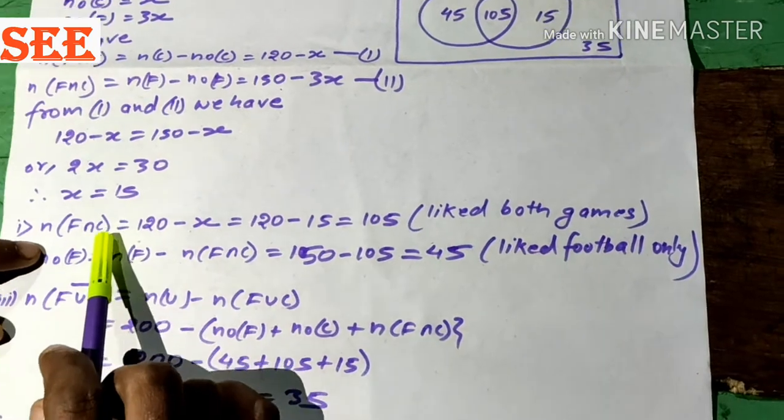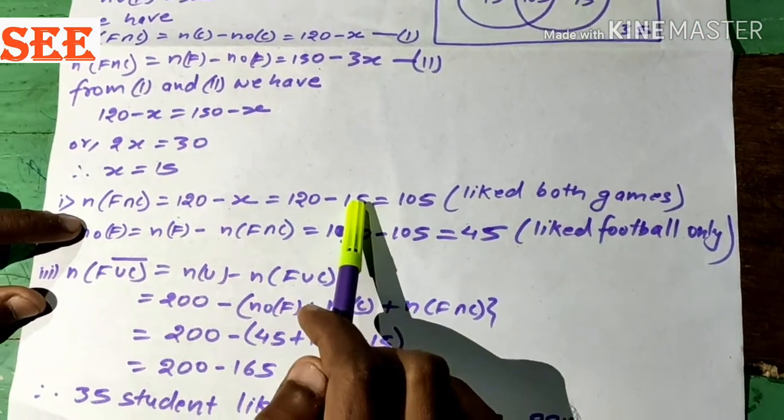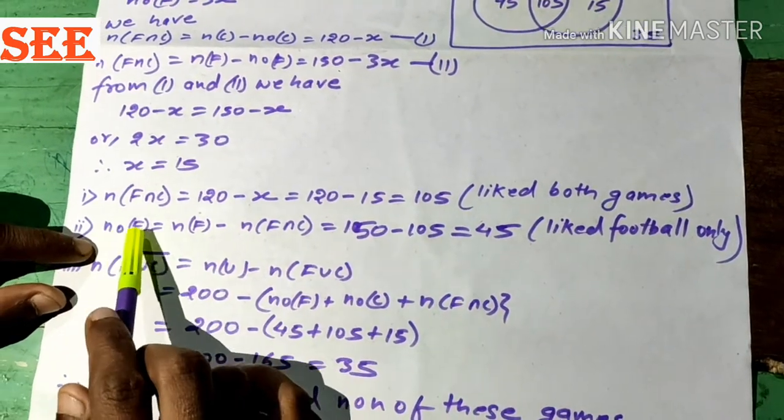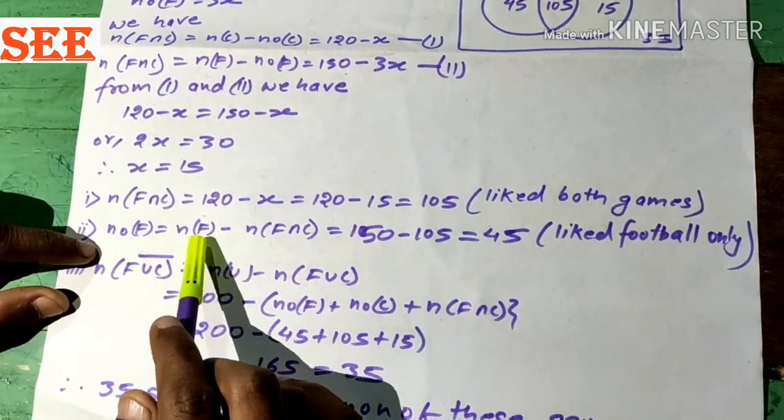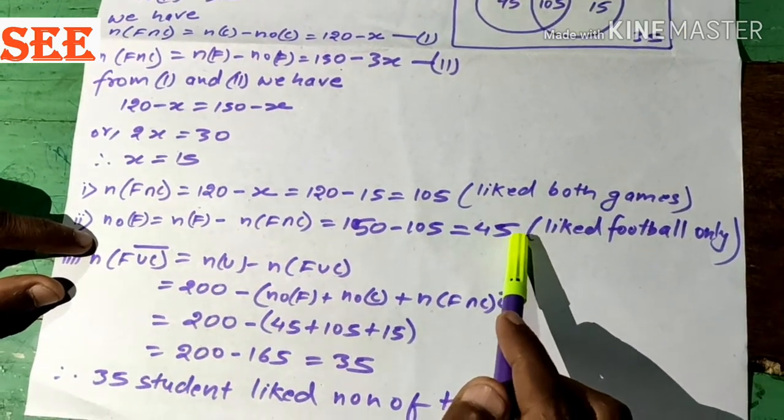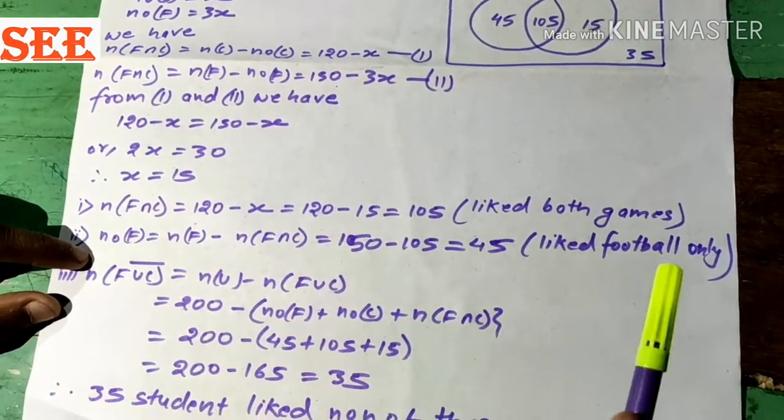Now, n(F ∩ C) = 120 - x = 120 - 15 = 105. Here, 105 like both games and 45 like football only.